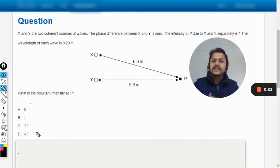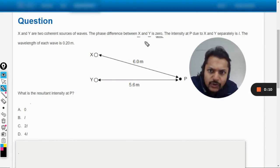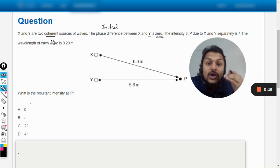Okay dear students, let us see how to do this question. X and Y are two coherent sources of waves. The phase difference between X and Y is zero, so they're talking about the initial phase difference, because for coherent sources the phase difference will be constant. The initial phase difference will be constant, it might be zero, it might not be, but it is given that it is zero.